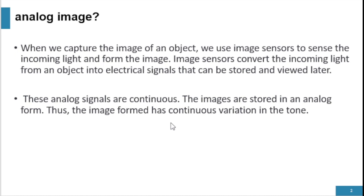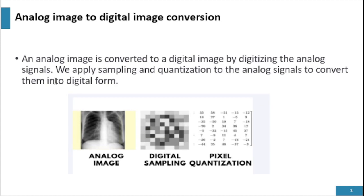The images that we capture have continuous signals. We cannot process analog images by computer because analog signals contain infinite points and we need infinite memory to store them. We need to convert analog images into digital images to store and process them by computer. We cannot process continuous signals by computer, so we need to convert analog images to digital images.